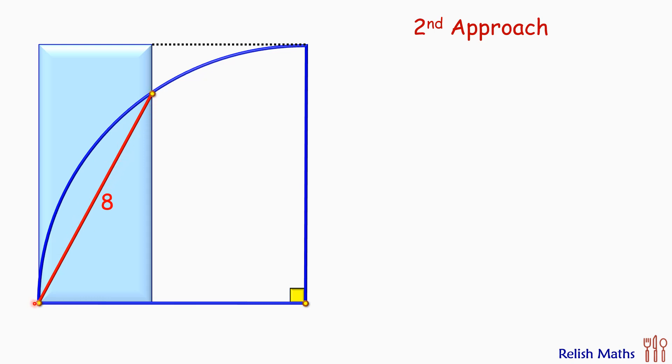So as long as this length of the chord is maintained as 8, then the area of rectangle will remain fixed irrespective of the radius of the quadrant.